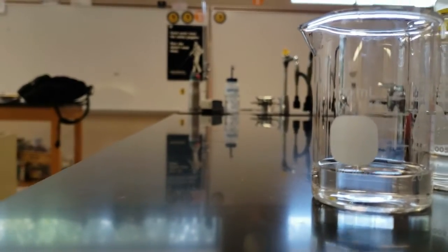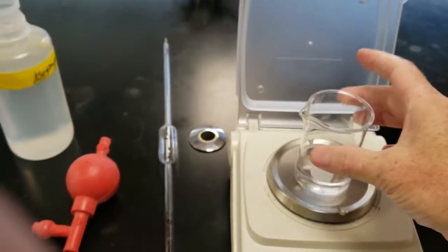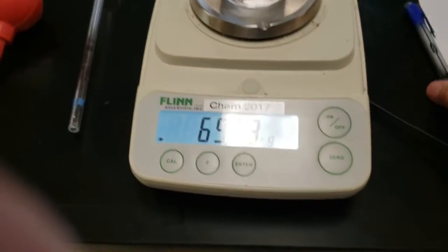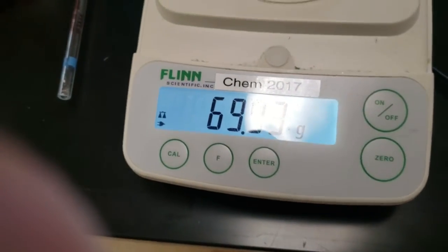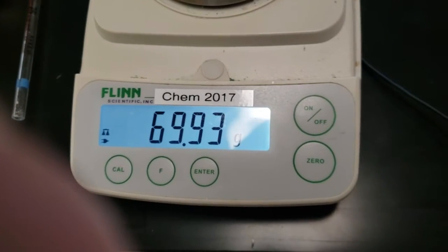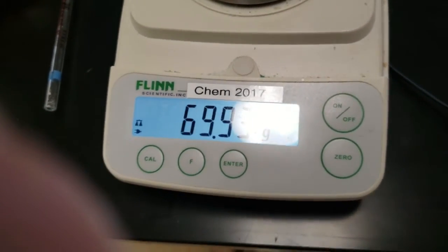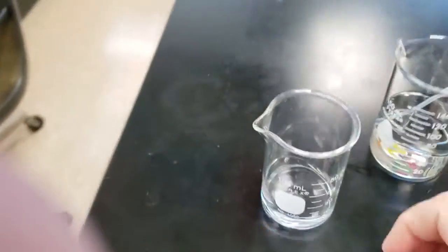Once you think you have it so that the bottom of the meniscus is on the line, we are going to zero out the scale and weigh it again. So this would be the mass of the beaker and the 20-milliliter alcohol. For this lab, we're using isopropyl alcohol. Some other lab, we may use ethanol or methanol.